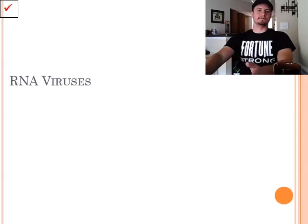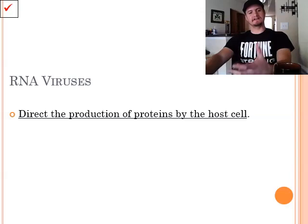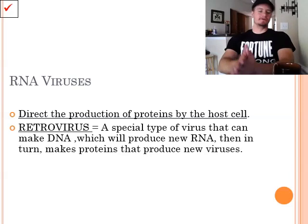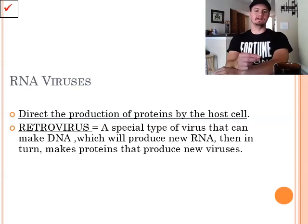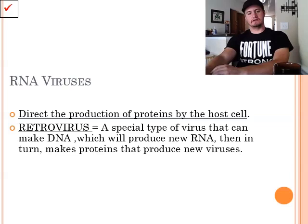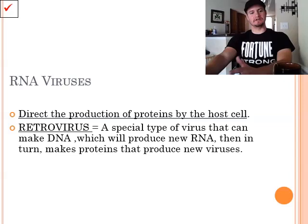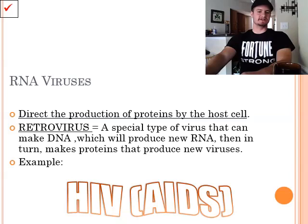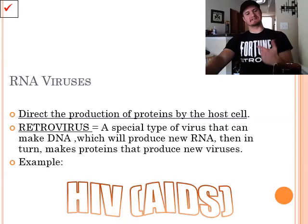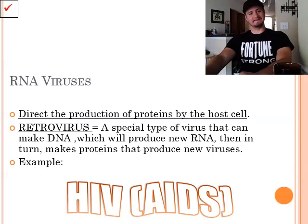So, RNA viruses. RNA viruses direct the production of proteins by a host cell. Now, there are very specific types of these like the retrovirus. A retrovirus is a special type of virus that can make DNA. Once it makes this DNA, it can produce new RNA and then in turn can make new proteins to produce new viruses. So, this type of virus actually isn't as reliant on a host cell as the others, making it far more dangerous. And the most famous example of this is HIV or AIDS, which is a highly detrimental disease that breaks down your immune system and basically makes it so something as easy as the common cold could kill you. It's really nasty.